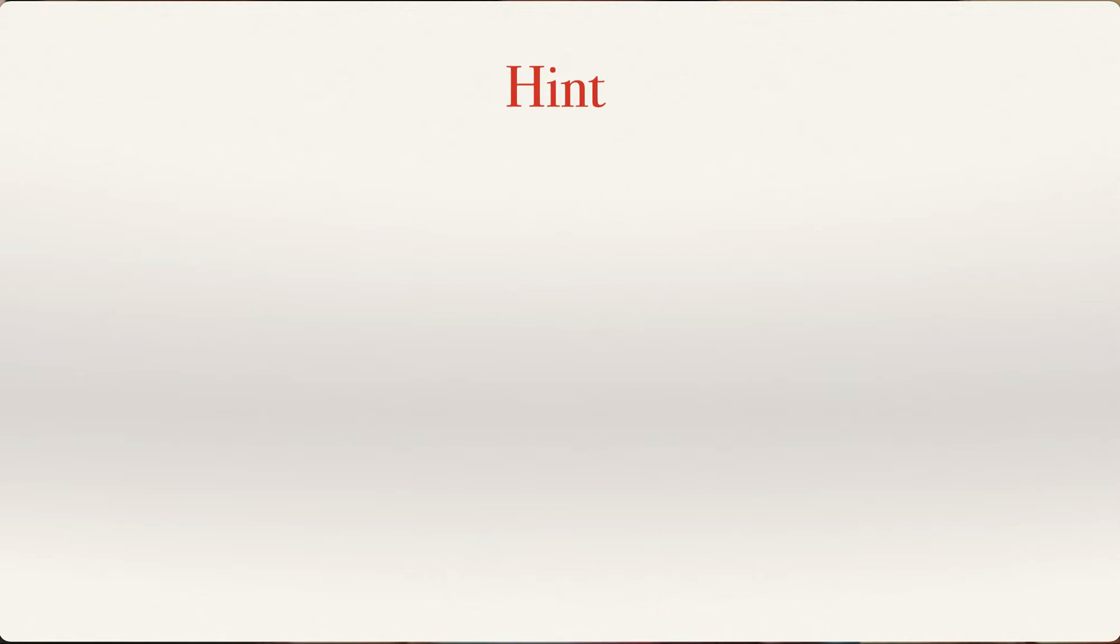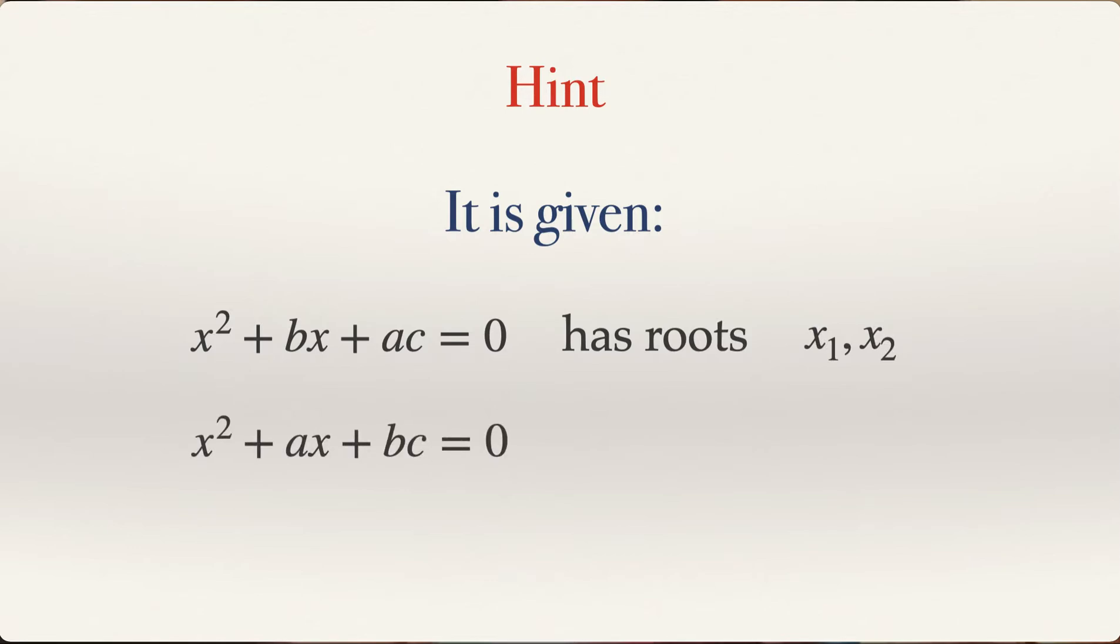Okay, now let's carry on with the problem. I'll first give you a hint as promised. So it's given that x squared plus bx plus ac is equal to zero. This particular equation has roots x1 and x2. And it's also given that x squared plus ax plus bc equal to zero has roots x2 and x3.